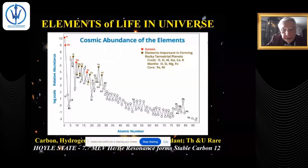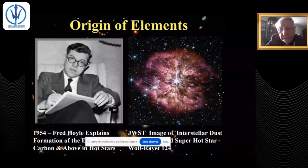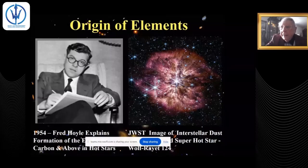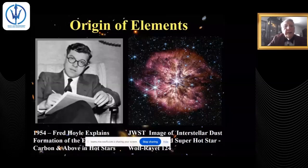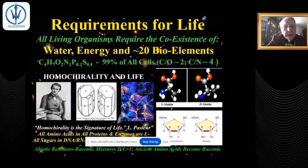Recent supercomputer and synchrotron studies show that in the unstable state, the three alpha particles are like a bent arm, while in the stable state they sit at the apices of a triangle. This occurs in super-hot stars at about 100 million degrees. All living organisms require the coexistence of water, energy, and only 20 biogenic elements out of 118.